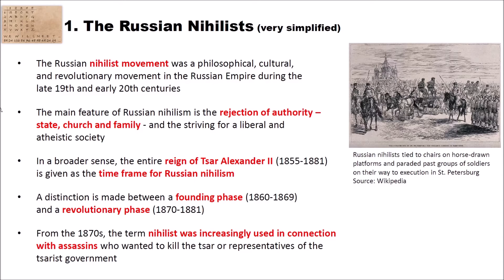The Russian nihilist movement was a philosophical, cultural, and revolutionary movement in the Russian Empire during the late 19th and early 20th centuries. The main feature of Russian nihilism is a rejection of authority, state, church, family, and society, and the striving for a liberal and atheistic society. In a broader sense, the entire reign of Tsar Alexander II — from 1855 to 1881 — is given as the time frame for Russian nihilism, with a founding phase from 1860 to 1869 and a revolutionary phase from 1870 to 1881.